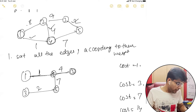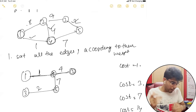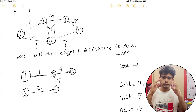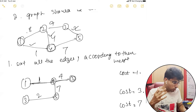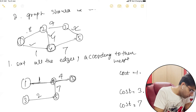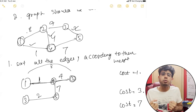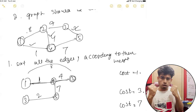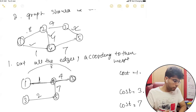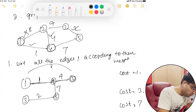But now, if you take 1 and 2, they are in the same connected component. So there already exists a path. There is no need to add this edge with its cost because it's simply going to increase our cost. Why would we want to increase our cost? We want to keep it as minimum as possible.